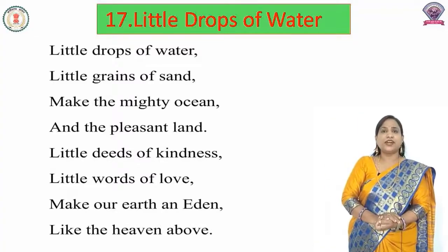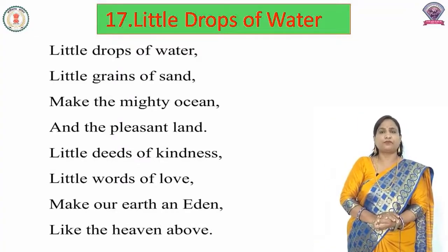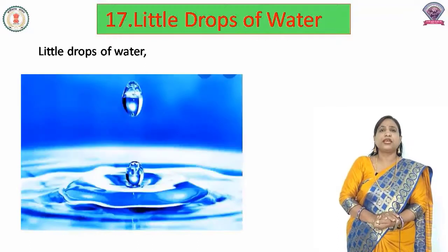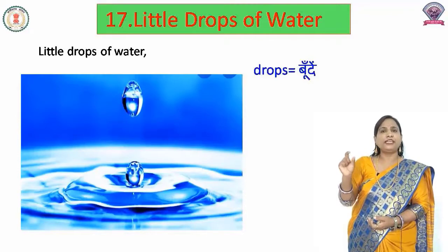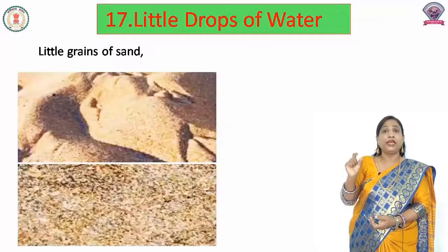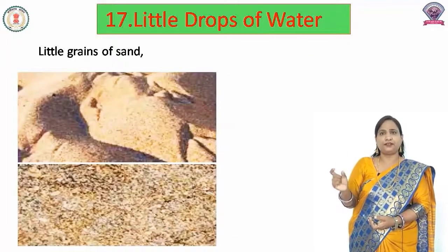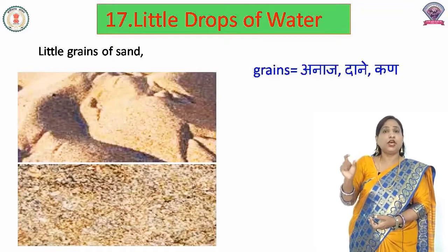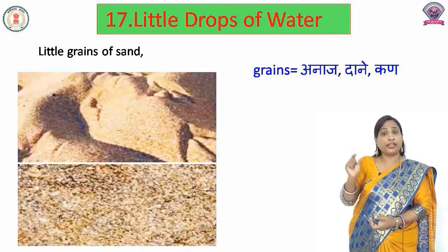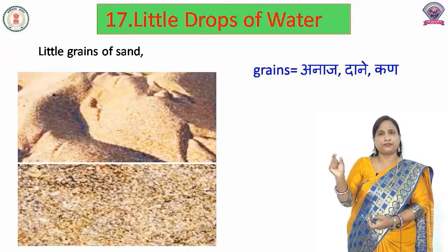Let's start to understand the poem. Little Drops of Water — 'drops' ka matlab hota hai bundi. Pani ki chhoti chhoti bundi. Little Grains of Sand — 'grains' yaane hota hai bacho, anaj, daane ya kand. To 'sand' yaane hota hai ret, ret ke chhotay chhotay kand.